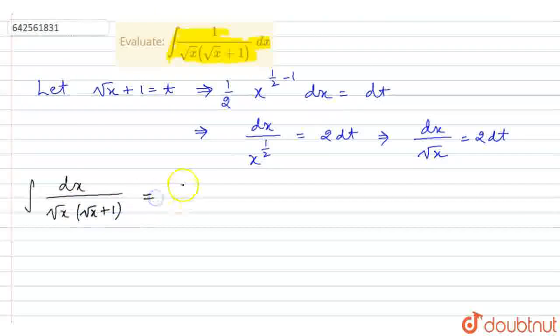Now, this integration becomes, after substitution—now dx upon root x is equal to twice of dt, and root x plus 1 is equal to t. So, it will be equal to 2 dt upon t.